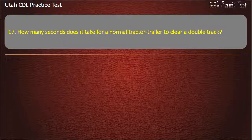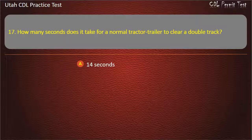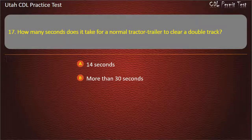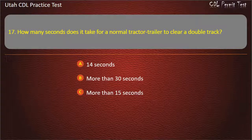Question 17. How many seconds does it take for a normal tractor trailer to clear a double track? 14 seconds. More than 30 seconds. More than 15 seconds. 10 seconds. Answer: More than 15 seconds.